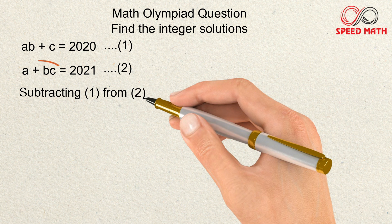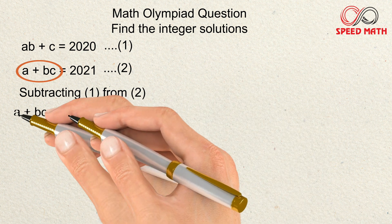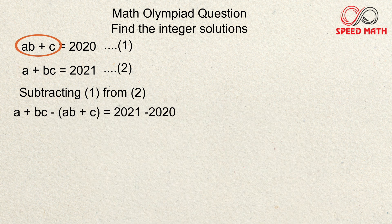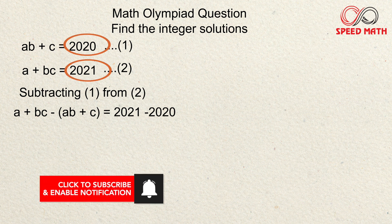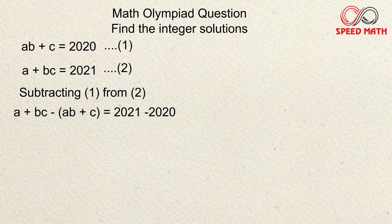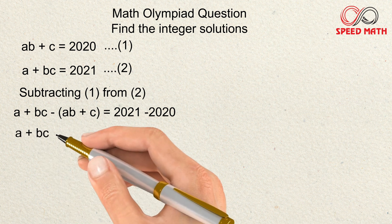Since we need to subtract equation one from two, we write equation two first: a + bc, then minus, and the next term comes in brackets — (ab + c). Obviously we subtract the right-hand sides as well, so 2021 minus 2020.